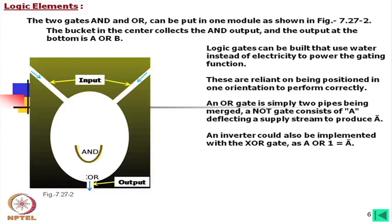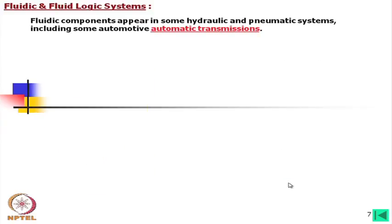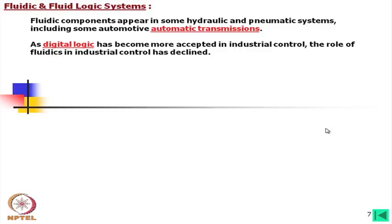An inverter could also be implemented with the OR gate: A OR 1 equals A-bar. Fluidic components appear in some hydraulic and pneumatic systems, including some automotive automatic transmissions.